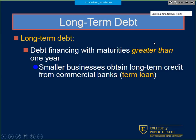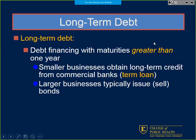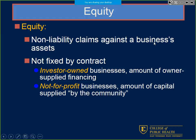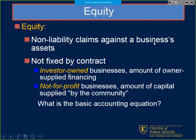Long-term debt — contrasting to short-term, we're looking at greater than one year. Loans from banks called term loans are usually 20 or 30-year terms, like a 30-year mortgage. Larger businesses — especially for-profit health systems — may sell or issue bonds on the market exchange. Moving from long-term debt to the bottom of the balance sheet, we have non-liability claims in terms of equity — in investor-owned businesses it's owner-supplied financing, in non-for-profit it's capital supplied by the community.